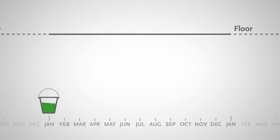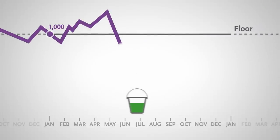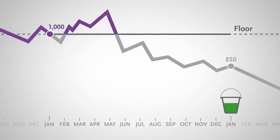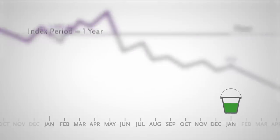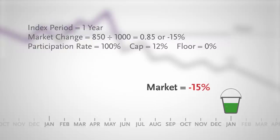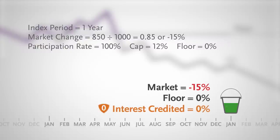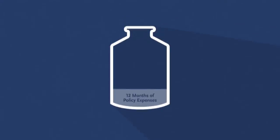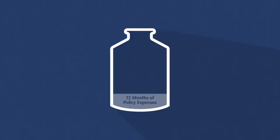When the change in your strategy is negative, it doesn't impact the cash value in the policy because you're protected by the 0% floor. The market had a change of negative 15%. Thanks to the floor, the strategy bucket gets a 0% interest credit. Remember, though, that policy expenses will continue to come out of the policy.